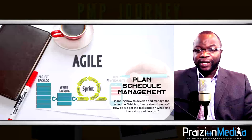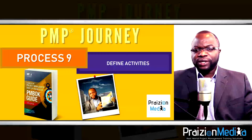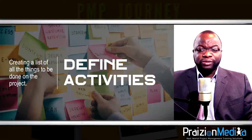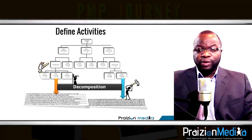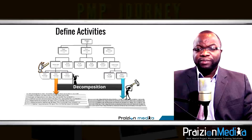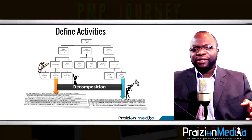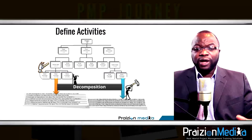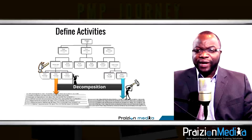Process 9: Define activities. This is where you create an activity list — it does not have to be in order. We take our work breakdown structure work packages and break them down from larger buckets of roughly 80 to 320 hours on smaller projects, into smaller pieces of maybe one hour, half an hour, two hours, three hours. That's define activities.